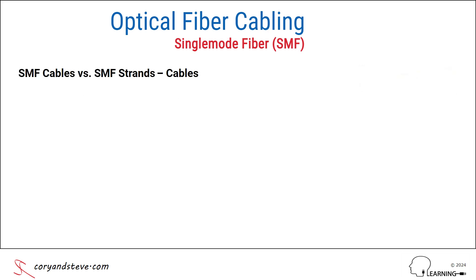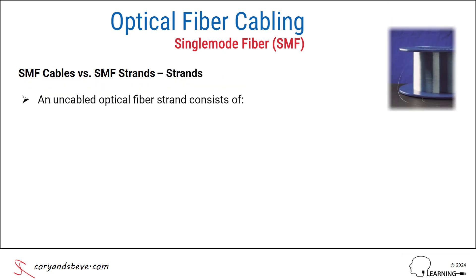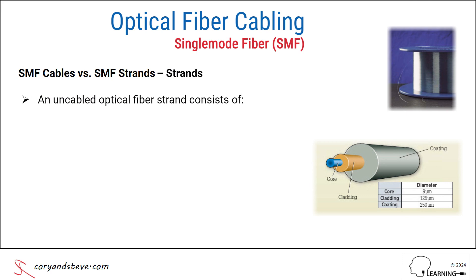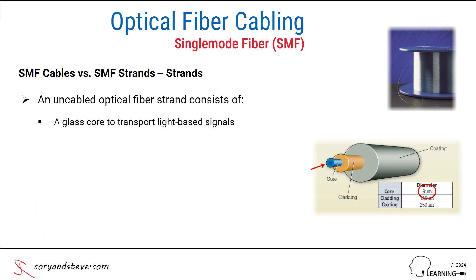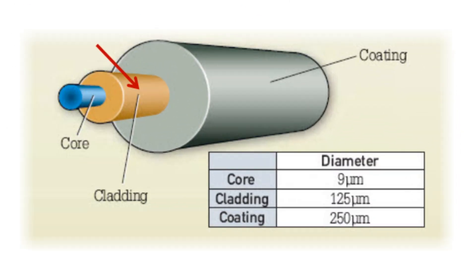An uncabled single-mode fiber strand consists of three parts or layers — two of which are made of glass and a third of an acrylate or plastic. The innermost layer is the glass core that transports the light-based signals, measuring in the range of 8.5 to 9.5 micrometers or microns. For reference, one millimeter equals 1,000 microns. Surrounding the core, we have the glass cladding with different optical characteristics than the core, which serves to reflect the light and keep it contained in the core, preventing it from leaking out.